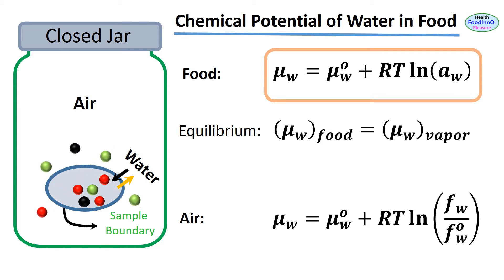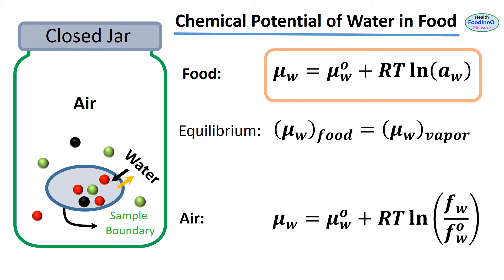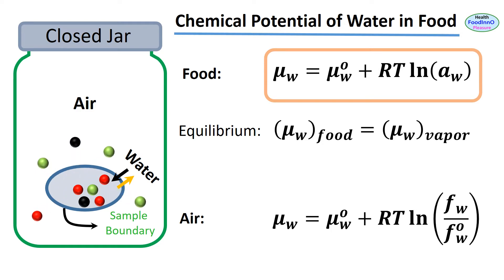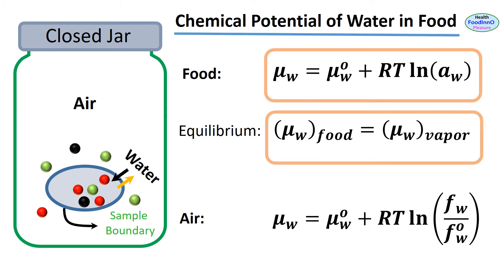We can now consider water-food-vapor interaction. At a constant temperature, all components and water in food are in thermodynamic equilibrium with each other in both the adsorbed and vapor phases. At the equilibrium state, the chemical potential of water inside the food and outside in the air are equal — that is, chemical potential inside food equals chemical potential of water in air.